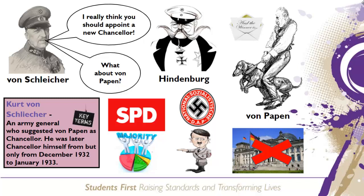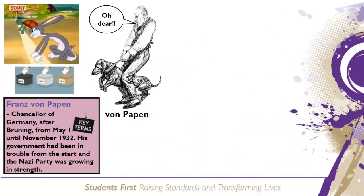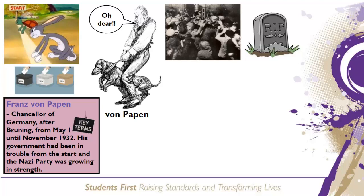Schleicher had assumed that von Papen would be able to control the Nazis, saying they were merely children who needed to be led by the hand. For the first time, the Nazis were part of the government of Germany. Von Papen's new government was in trouble from the start. In July there were elections to the Reichstag; once again, campaigning caused violence in the streets — about 100 people were killed and 7,000 injured. When the results were announced, the Nazis had won 230 seats and were now the largest party in the Reichstag.